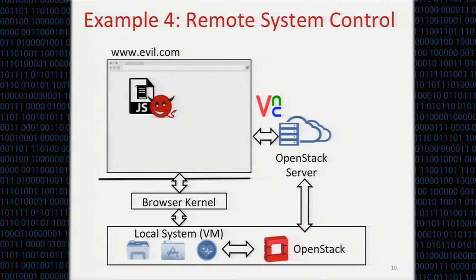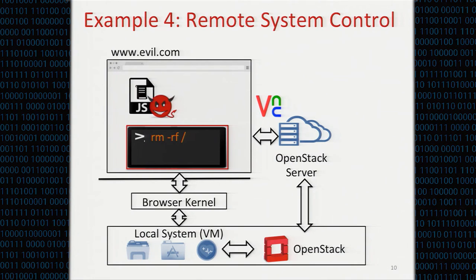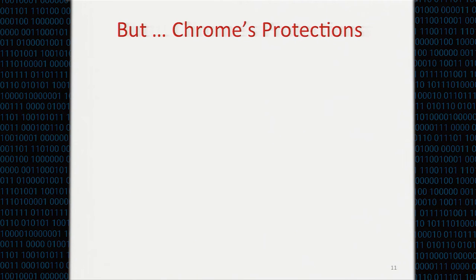The last example is even more dangerous. It utilizes the OpenStack service, a popular service for users to manage multiple virtual machines. It provides a convenient web interface for the user to directly send commands to remote VMs. If a malicious site sends commands on behalf of the web interface, the commands will be delivered to the remote VM via the VNC protocol and finally be executed by the VM. The result is that all data in the root directory are removed. These four examples are just a tip of the iceberg — malicious websites can abuse cloud APIs to indirectly affect the local system.